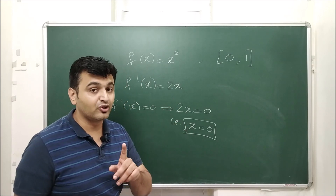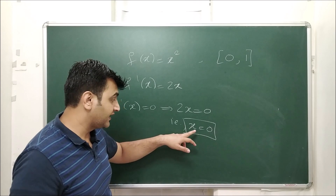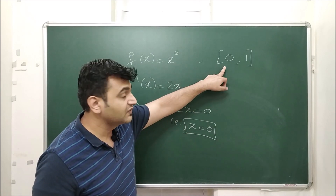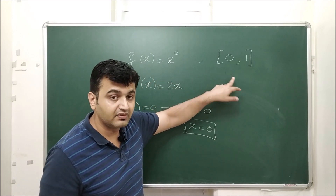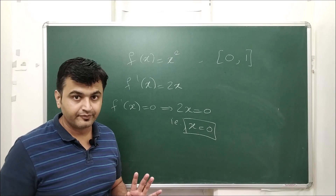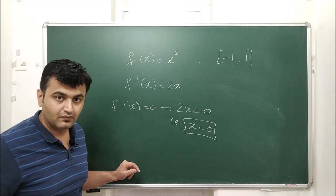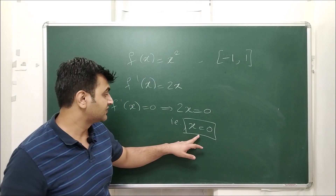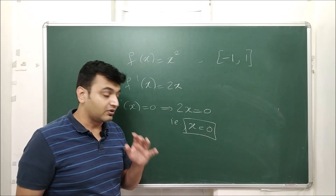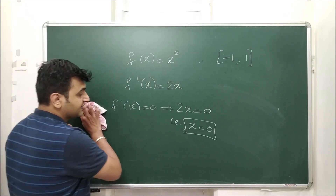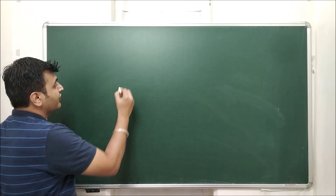The derivative is zero at x = 0, but you have to be cautious — is 0 an interior point? For the interval [0, 1], x = 0 is the boundary point, so it is not a critical point. However, if we change the interval to (-1, 1), then 0 is an interior point and would be a critical point. So the interval matters — always check whether the point is interior or boundary.